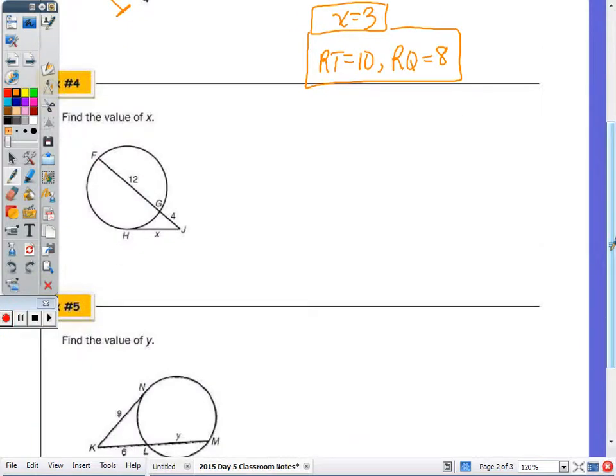Number 4, find the value of x. We have a tangent, and we have a secant. Just to highlight again, a tangent intersects the circle once, where a secant intersects the circle twice.